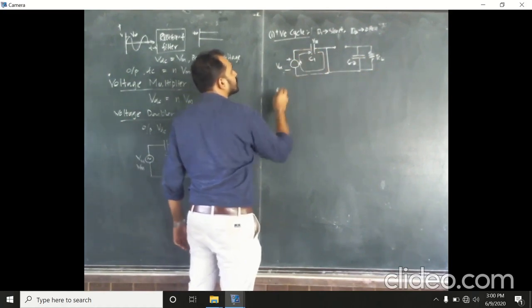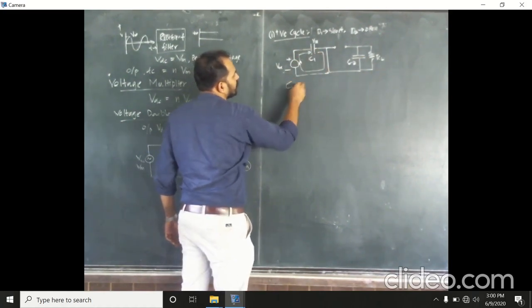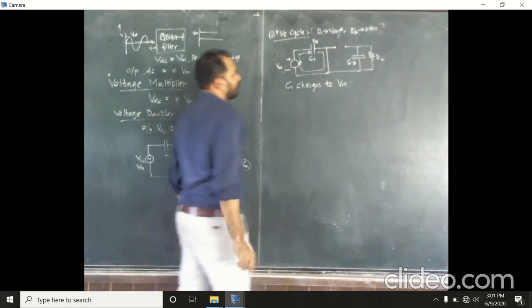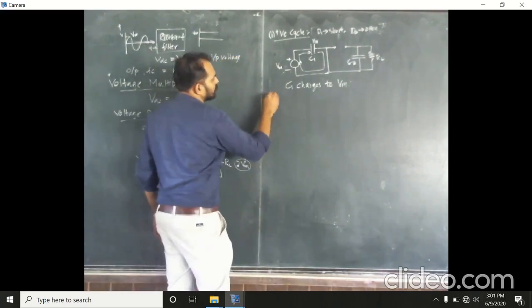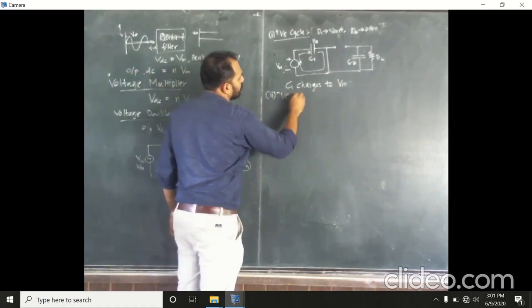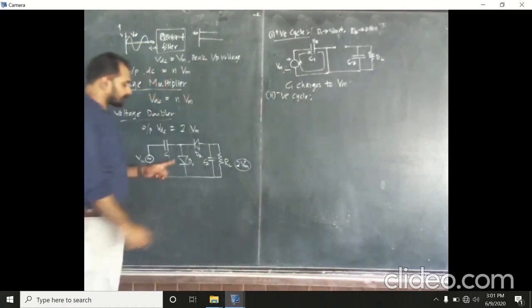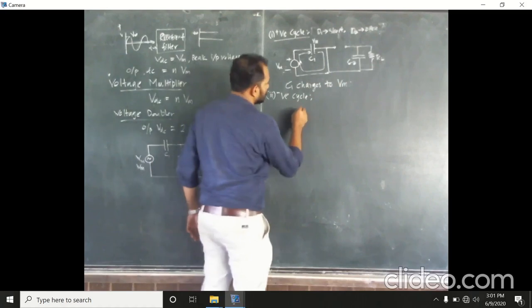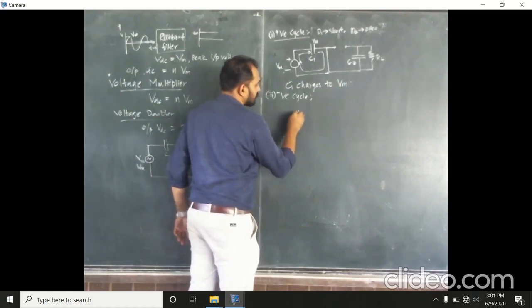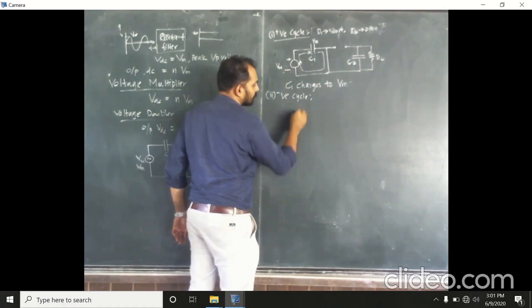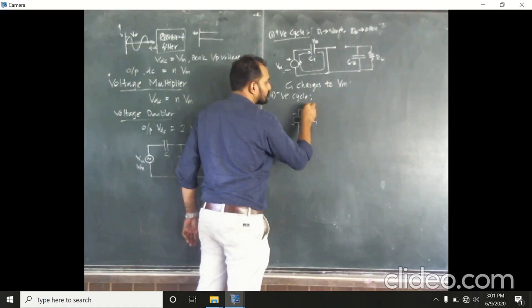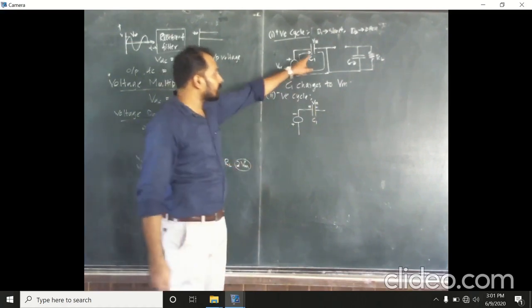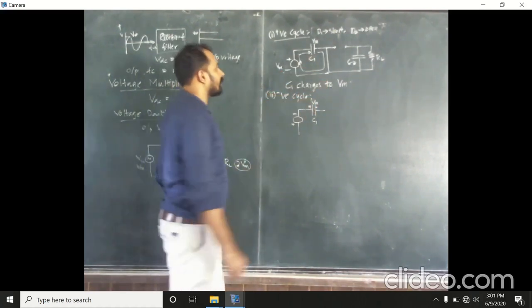So, during the positive half cycle, we can say that C1 charges to Vm. Now, let's see what happens during the negative half cycle. During the negative half cycle, D1 is reverse biased and D2 is forward biased. C1 is already charged to the value Vm during the positive half cycle.